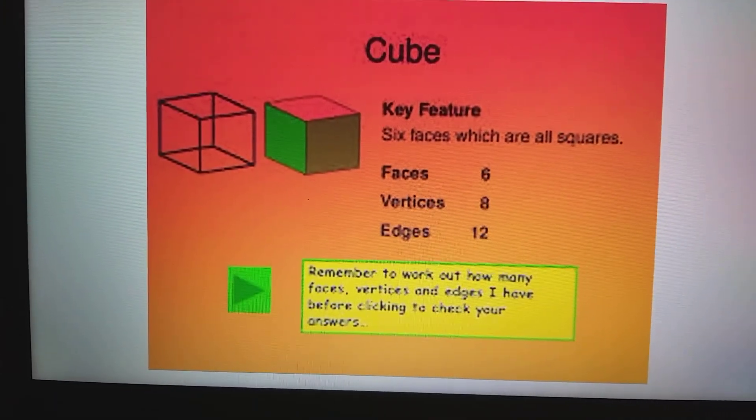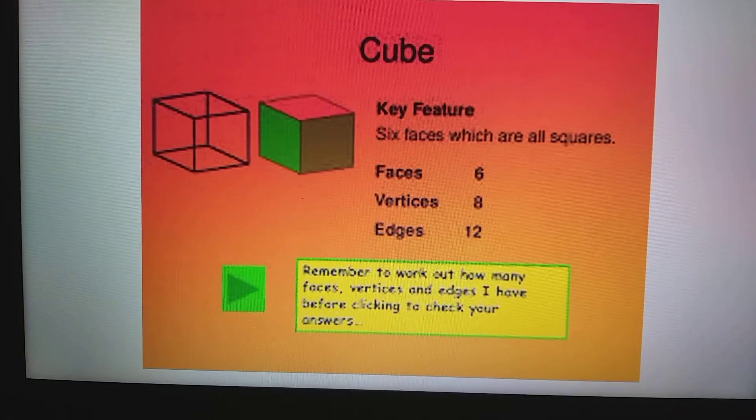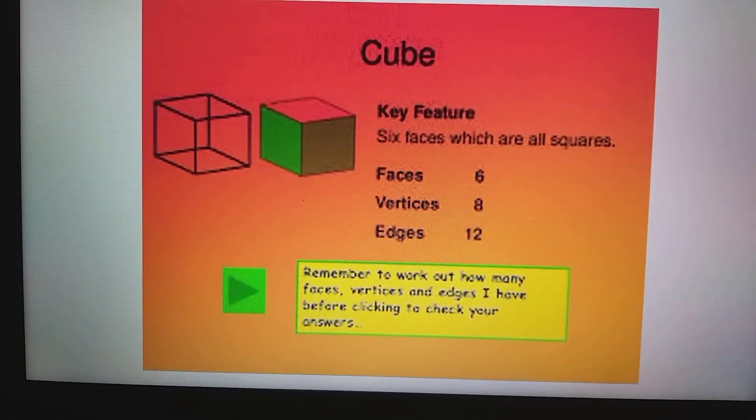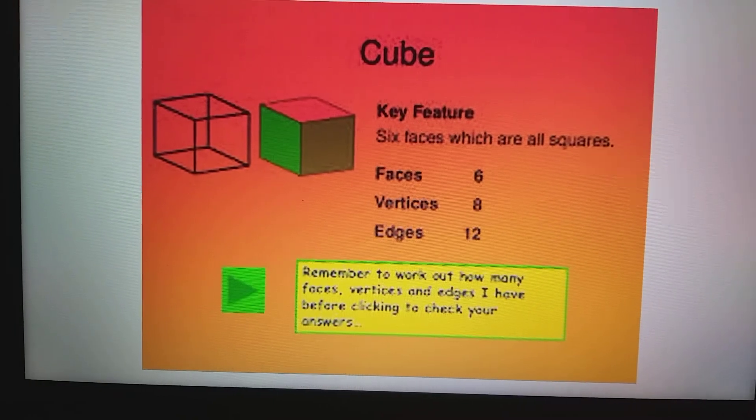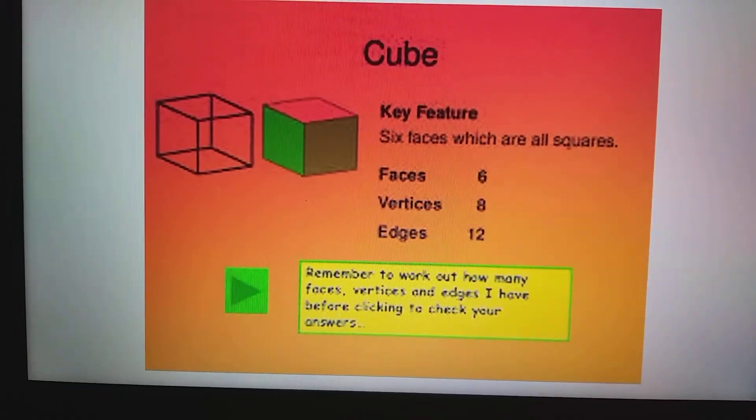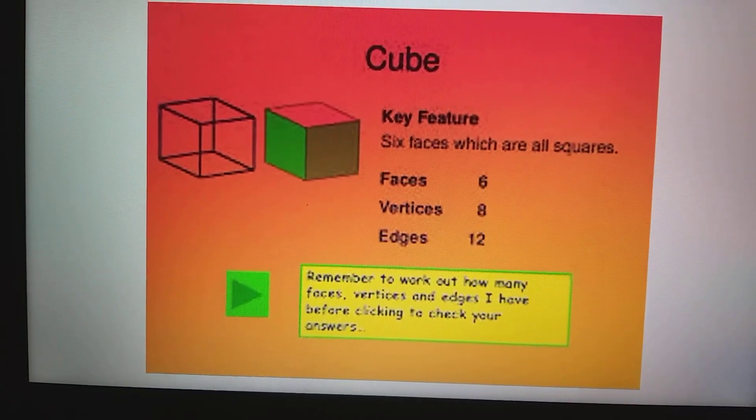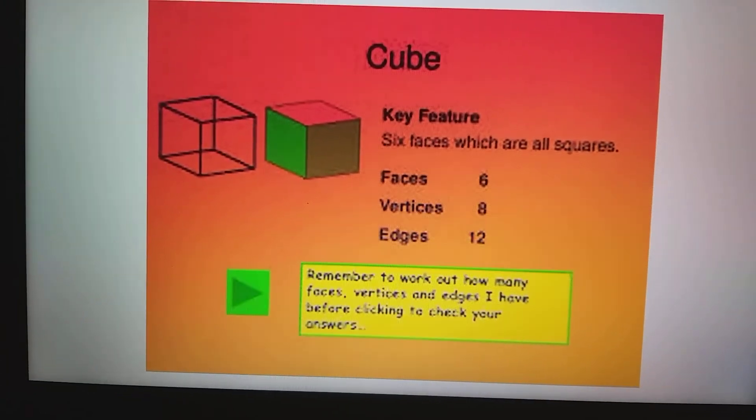So the first one is called a cube. I need you to look carefully at the solid, look at the properties of it, what shapes you can see within it and remember what it looks like.